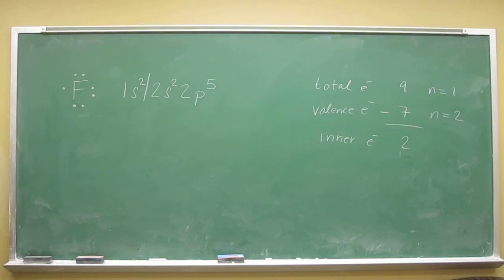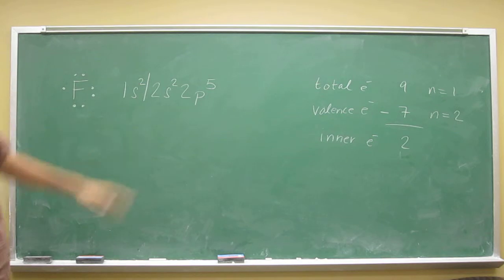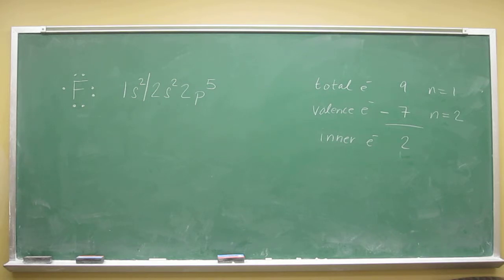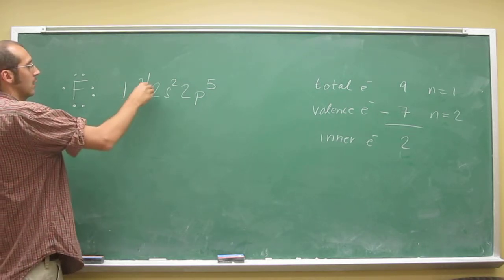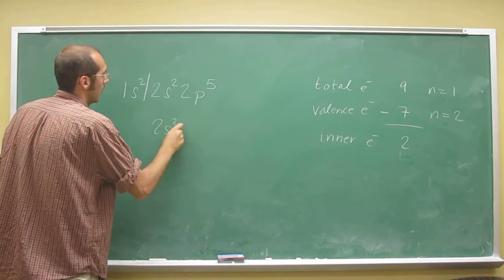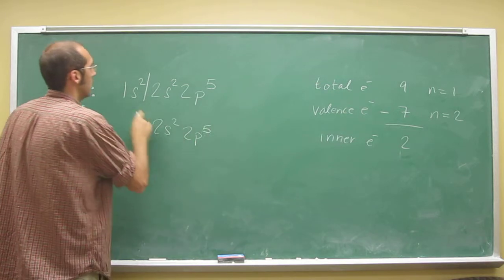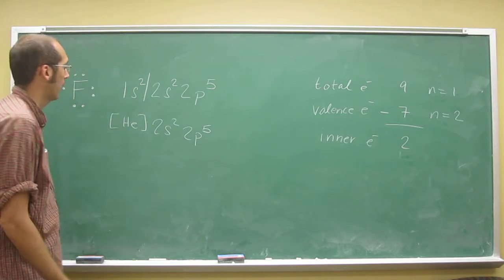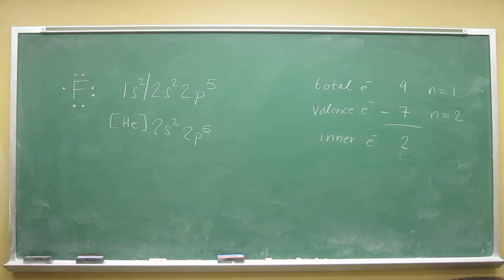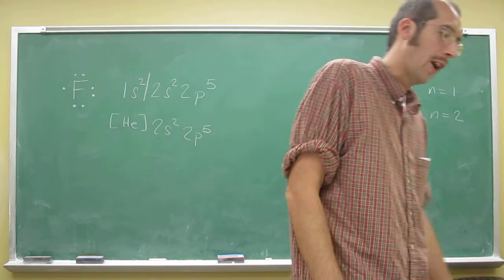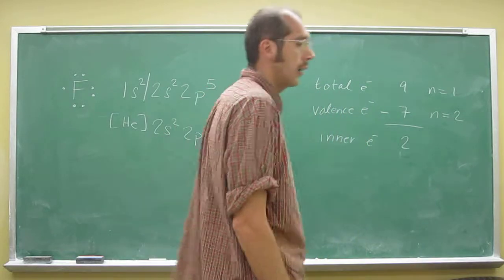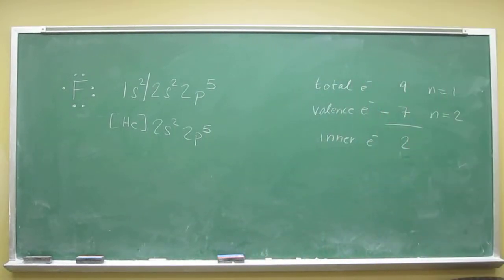This is actually very useful for later. So you can get a lot of information from this electron configuration — this is the full electron configuration. We should also do the condensed electron configuration. That's where you just take the valence electrons and write them the same way: 2s2, 2p5. Then you take the inner electrons and use the noble gas symbol in brackets. It doesn't look very condensed now, but when you get to bigger atoms like iodine or bromine, this will really come in useful.